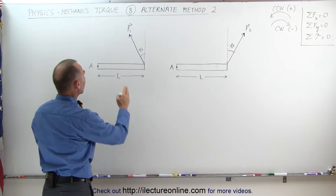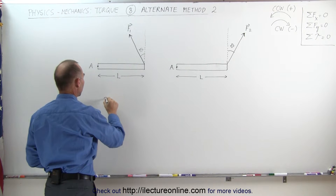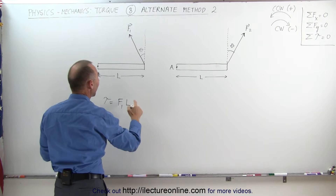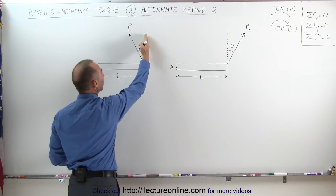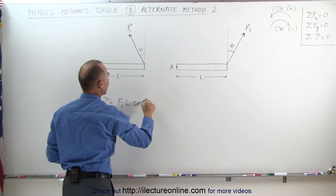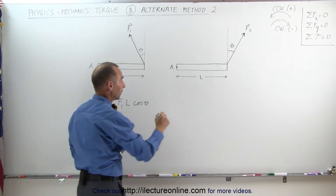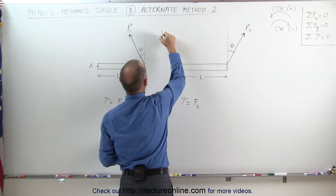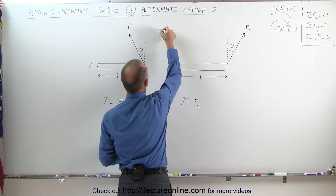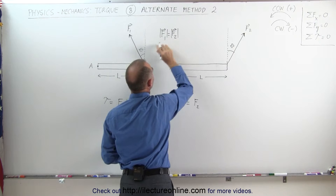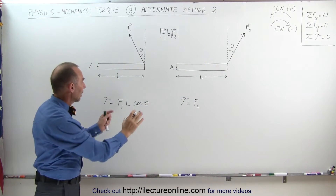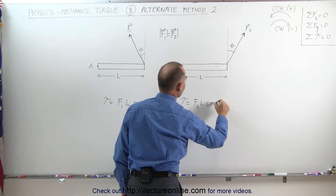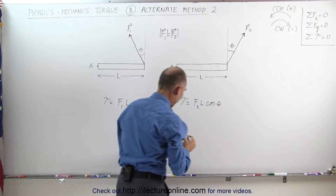Now if we're going to calculate the torque on the left beam, we can say that the torque is equal to the force F1 times the length of the beam L times the cosine of the angle between the vertical line and the direction of the force — in this case the cosine of theta. Here we're claiming that the torque would be equal to the magnitude of F2. Notice that the magnitude F1 equals the magnitude F2, so it would be the same magnitude times L times the cosine of the angle theta between the vertical and the direction of the force.